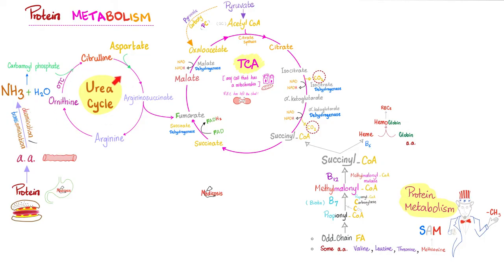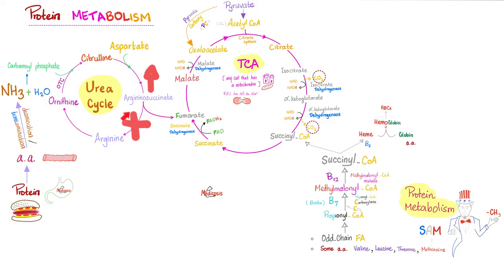Ammonia goes to the urea cycle, which has an important intermediate that feeds into the TCA cycle. If I'm born with a deficiency of an enzyme in the urea cycle — say the enzyme that converts argininosuccinate to arginine — argininosuccinate will not become arginine and will accumulate. This is called argininosuccinic aciduria. By measuring amino acid levels in the lab, you'll find low arginine but high argininosuccinate, allowing you to diagnose this case.